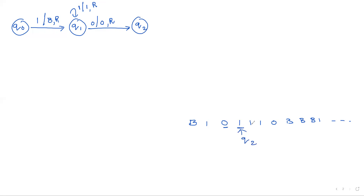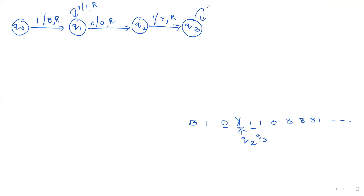Now I am at state q2 with input one. This one is replaced with the special symbol Y — move to state q3, one is replaced with Y and then move right. In state q3, if any number of ones occur, all the ones are replaced with ones and move to the right direction. Whenever zero occurs, zero is replaced with zero and then move to the right direction.